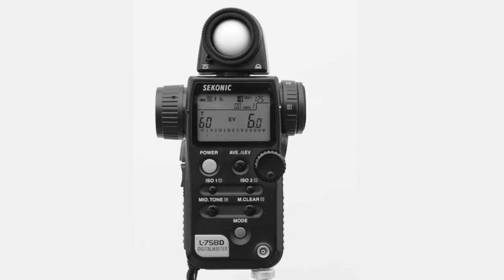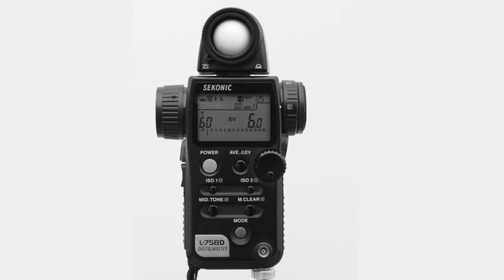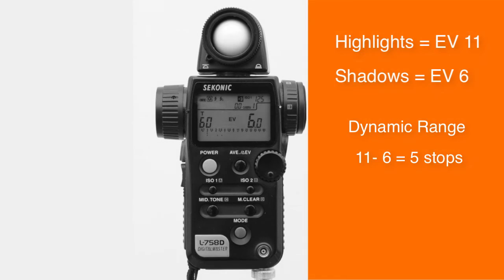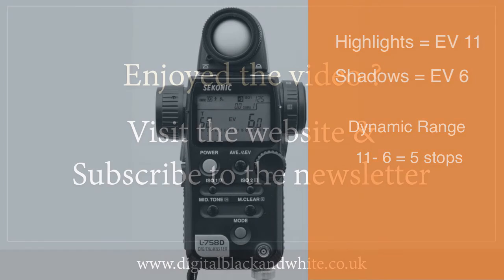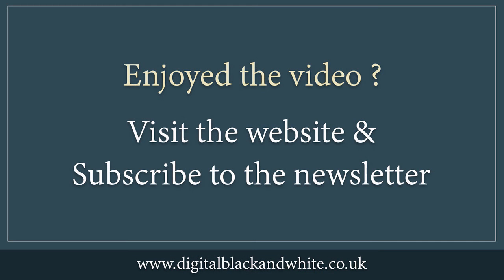In order to calculate the dynamic range of the scene, all we have to do is deduct the shadow value from the highlight value. In this case, 11 minus 6 gives us a total dynamic range of 5 working stops.